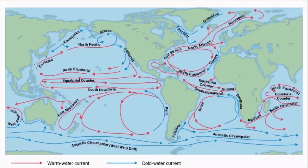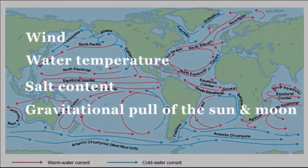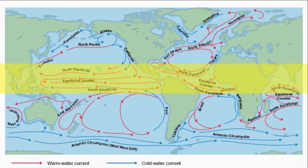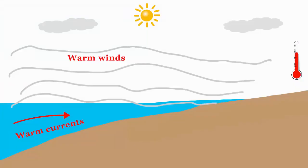The fifth factor is ocean currents — a continuous movement of ocean water from one place to another. Ocean currents are created by wind, water temperature, salt content and the gravitational pull of the sun and moon. Generally, there are two types of ocean currents: cold and warm currents. Warm currents are near the equatorial region where sun rays fall directly. These warm and cold currents influence the local winds of the nearby land mass and cause changes in climatic conditions. With warm currents, the land mass faces a warm and humid climate.